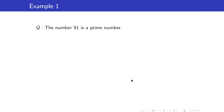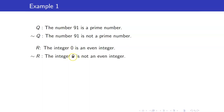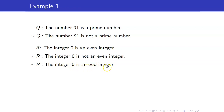For example, let us get the negation of the proposition Q: 'The number 91 is a prime number.' Its negation is 'The number 91 is not a prime number.' Another example: 'The integer 0 is an even integer.' Its negation is 'The integer 0 is not an even integer,' or you can also say 'The integer 0 is an odd integer,' because if you're not an even integer, you are definitely an odd integer.